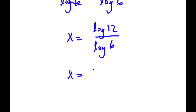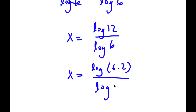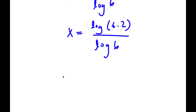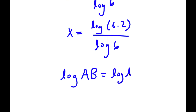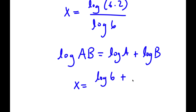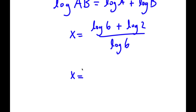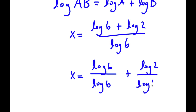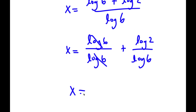Now log 12 is the same as log of 6 times 2, and using the product rule, log of a times b equals log a plus log b. So log of 6 times 2 can be written as log 6 plus log 2. Now I have log 6 plus log 2 over log 6. This is the same as log 6 over log 6 plus log 2 over log 6. Since log 6 over log 6 cancels, x equals 1 plus log 2 over log 6.